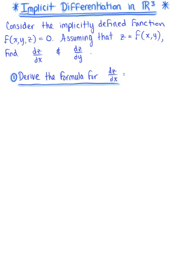Now that we have refreshed our memories on implicit differentiation in R2, let's spice it up a little bit and think about implicit differentiation in space. This is going to be a really simple and straightforward application of the chain rule.